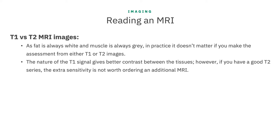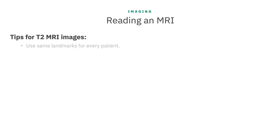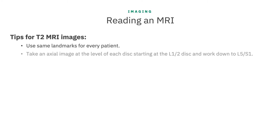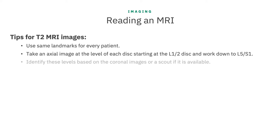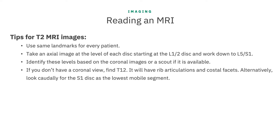I'm going to use the T2 images for the rest of this demonstration to make this point. When I do these measurements in my practice, I try to consistently use the same landmarks for every patient. I take an axial image at the level of each disc starting at the L1-2 disc level and working down to L5-S1. You should be able to identify these levels based on the sagittal images or a scalp if it is available. If for some reason you don't have a good sagittal view, look caudally for the S1 disc as the lowest mobile segment.